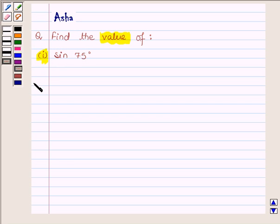Let us now begin with the solution. We have to find the value of sine 75 degree, which can be written as sine 45 degree plus 30 degree.